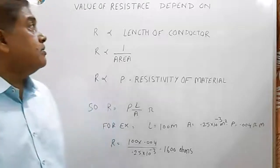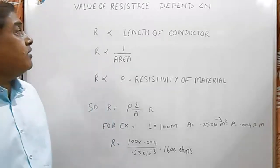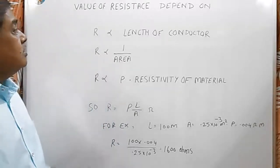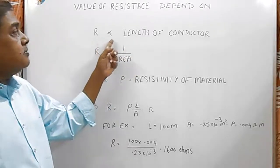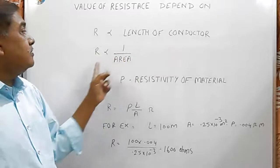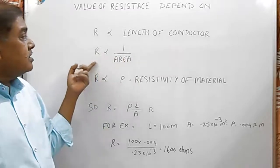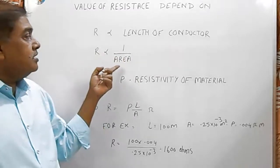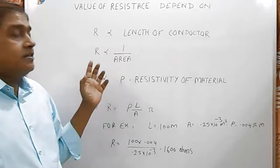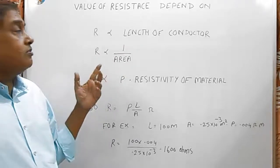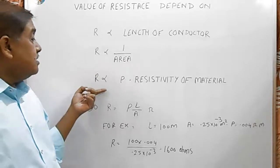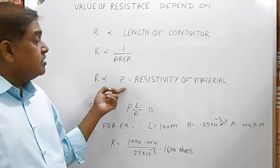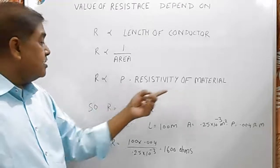The value of resistance of a wire depends on the length of the conductor. Resistance is directly proportional to the length of the conductor. Resistance is inversely proportional to the area of the conductor. As area increases, resistance decreases. And third, resistance is directly proportional to rho or resistivity of the conductor.